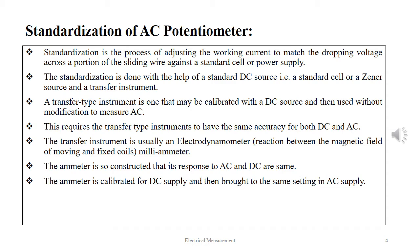The standardization is done with the help of a standard DC source, i.e. standard cell or a Zener source, and a transfer instrument. A transfer-type instrument is one that may be calibrated with a DC source and then used without modification to measure AC.